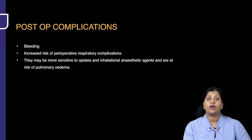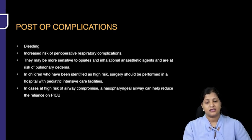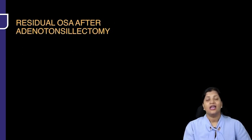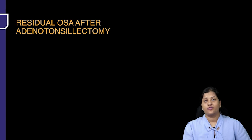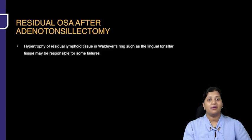After doing a tonsillectomy and adenoidectomy, post-operative complications such as bleeding, pulmonary edema, and reactions to opiates or inhalational anesthetics can be risk factors. You should monitor these complications very carefully when you do surgery for OSA with adenotonsillar hypertrophy in a child.